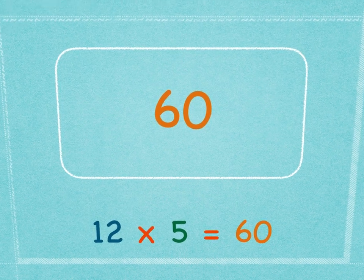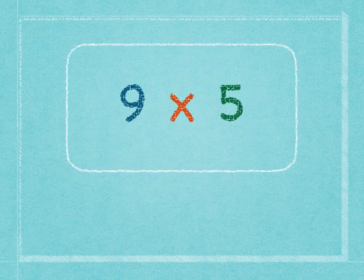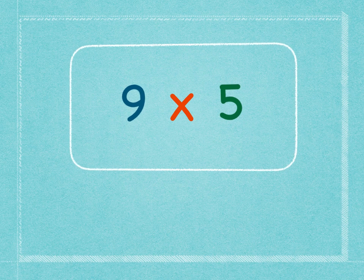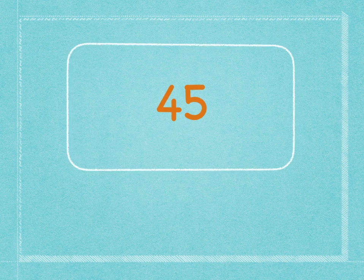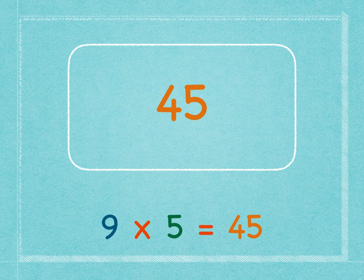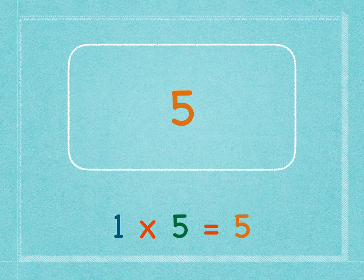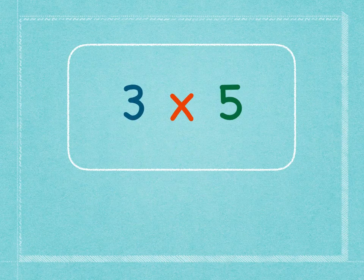Nine times five is forty-five. Nine times five is forty-five. One times five is five. One times five is five. Three times five...